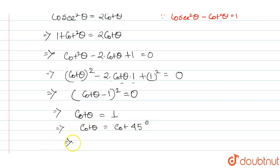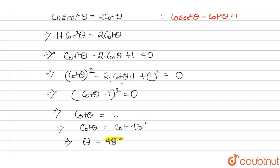Both sides, cot and cot cancel out. So the value of theta comes out to be 45 degrees. That is our final answer for finding the value of theta.